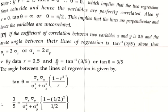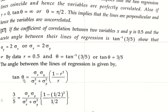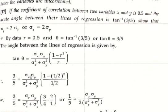Taking tan on both sides, tan theta equals 3 by 5. The acute angle between the lines of regression is given by tan theta equals sigma x into sigma y over sigma x squared plus sigma y squared, into 1 minus r squared over r. Substituting: 3 by 5 equals sigma x into sigma y over sigma x squared plus sigma y squared, and r equals 0.5 equals 1 by 2.